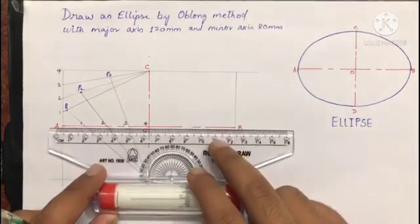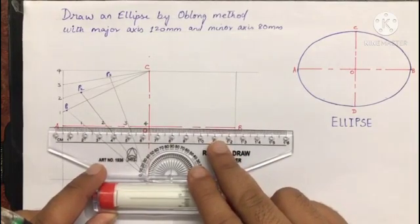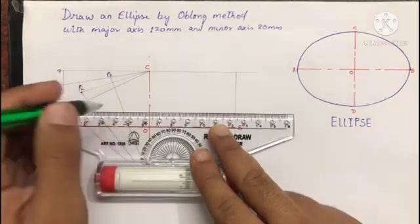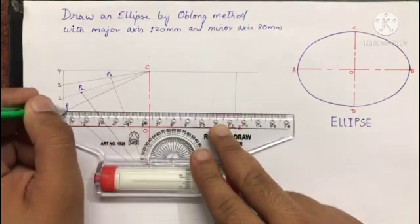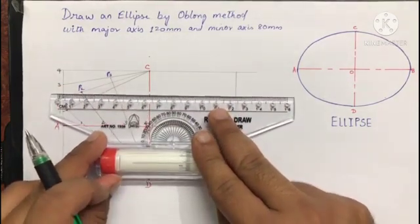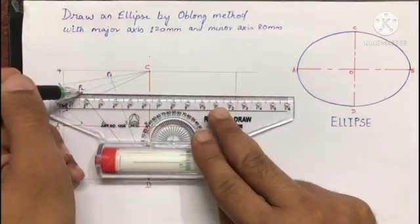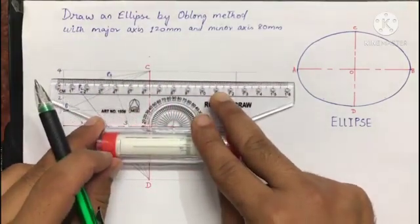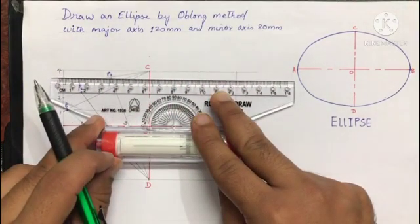Match the ruler scale with the major axis and slide it till point P1 and project this point in the next rectangle, then slide it till point P2 and project this line, then for P3.